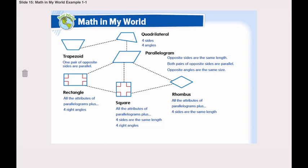What about the square? It has all the attributes of a parallelogram plus four sides of the same length and four right angles. Now, our question again: what attributes are shared by both rectangles and squares?